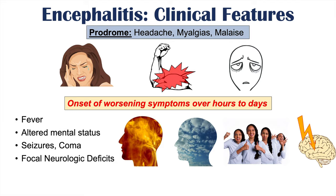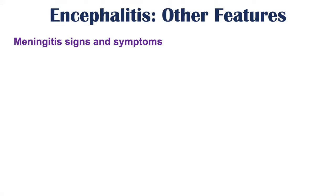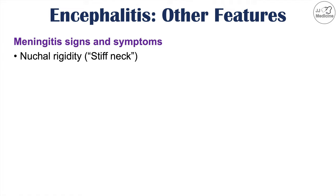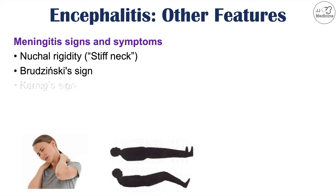If the meninges — the covering of the brain and spinal cord — are affected, this can lead to meningitis, as the infection and inflammation spread into the meninges. Signs and symptoms of meningitis include nuchal rigidity (stiff neck), Brudzinski's sign, and Kernig's sign.